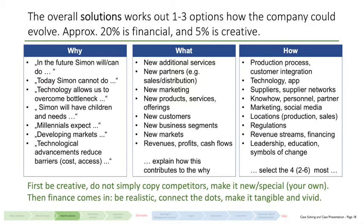If you look at the 'how' part, it is basically how companies operate. Companies operate with a set of aspects — they have a production process, and within that process there may be customer integration. They use technologies, apps, and suppliers. They use knowledgeable personnel.